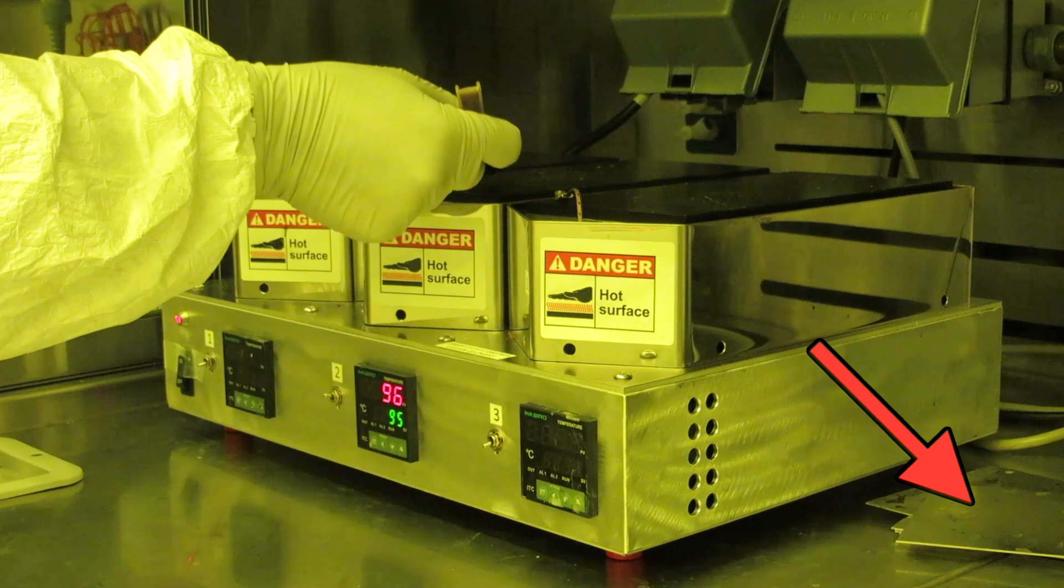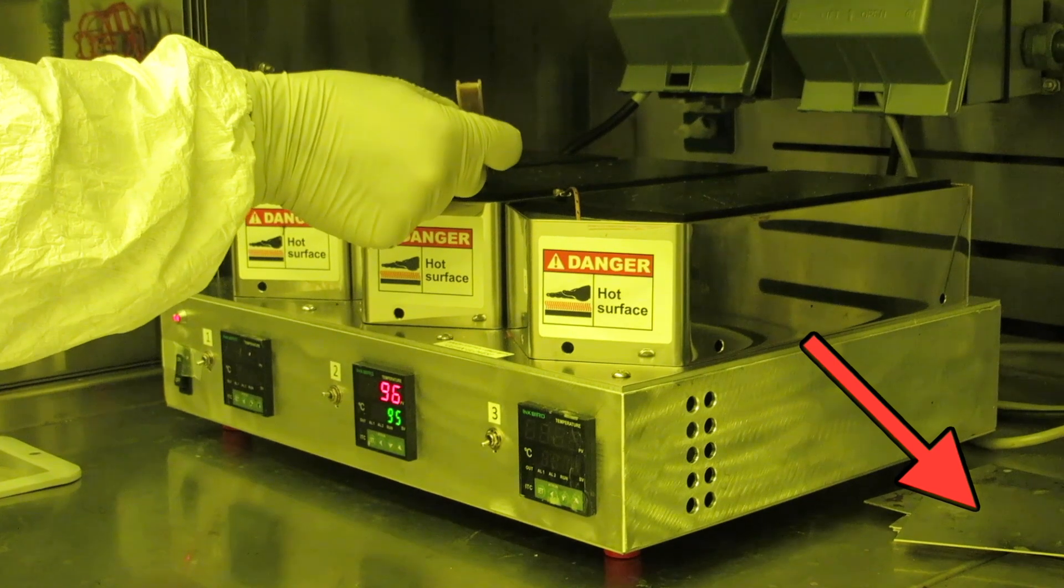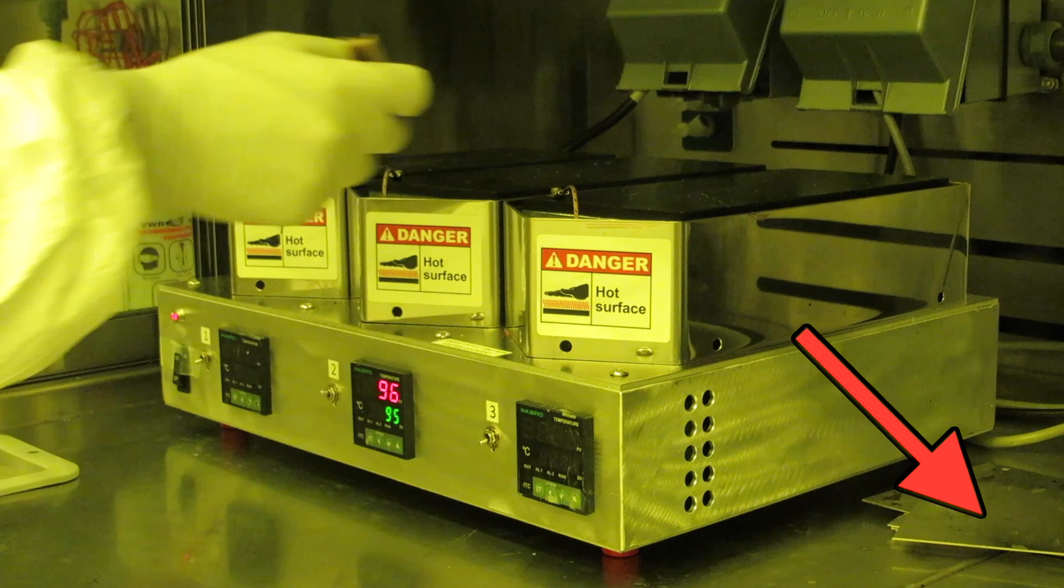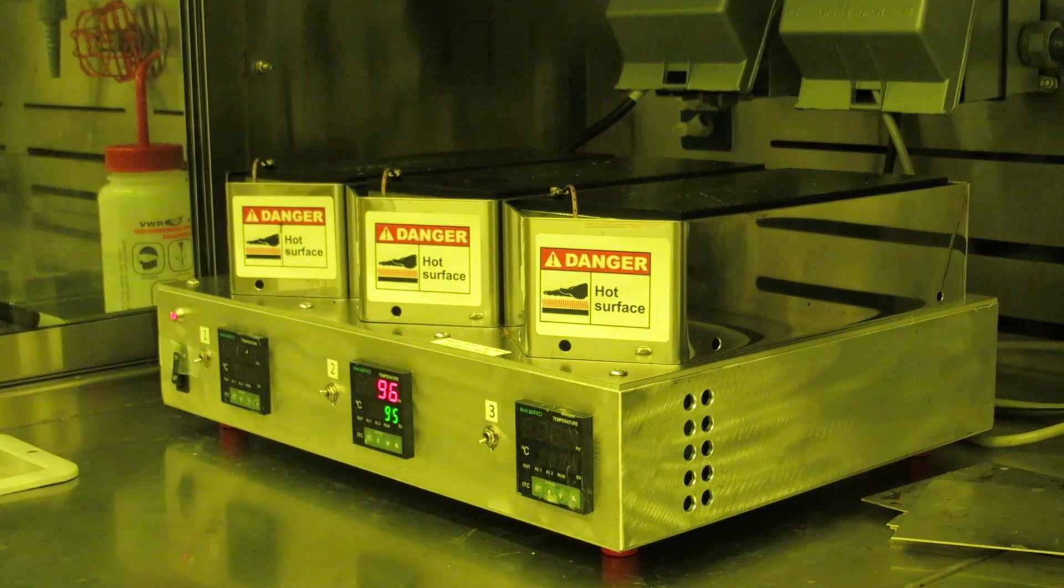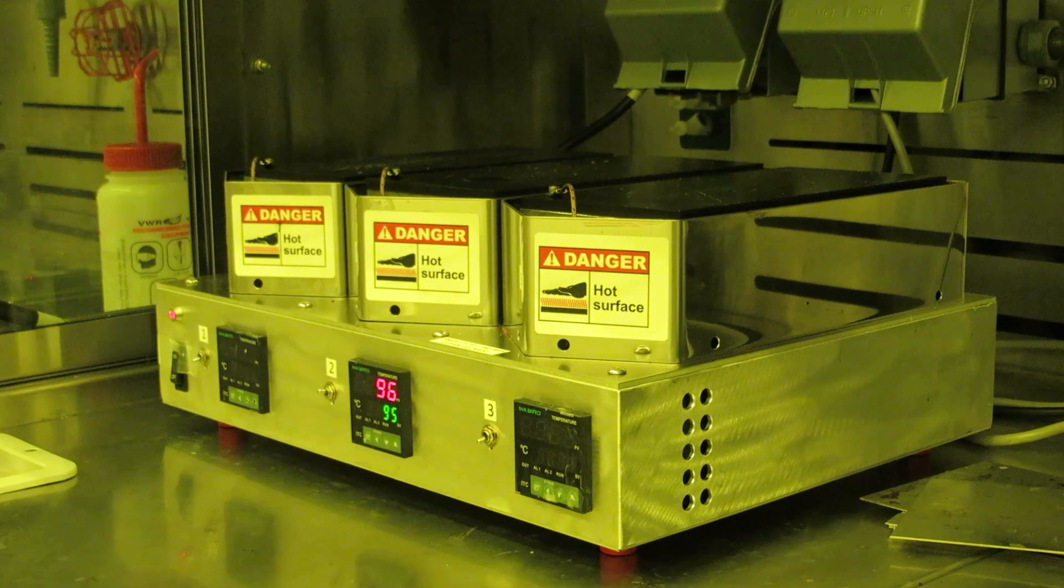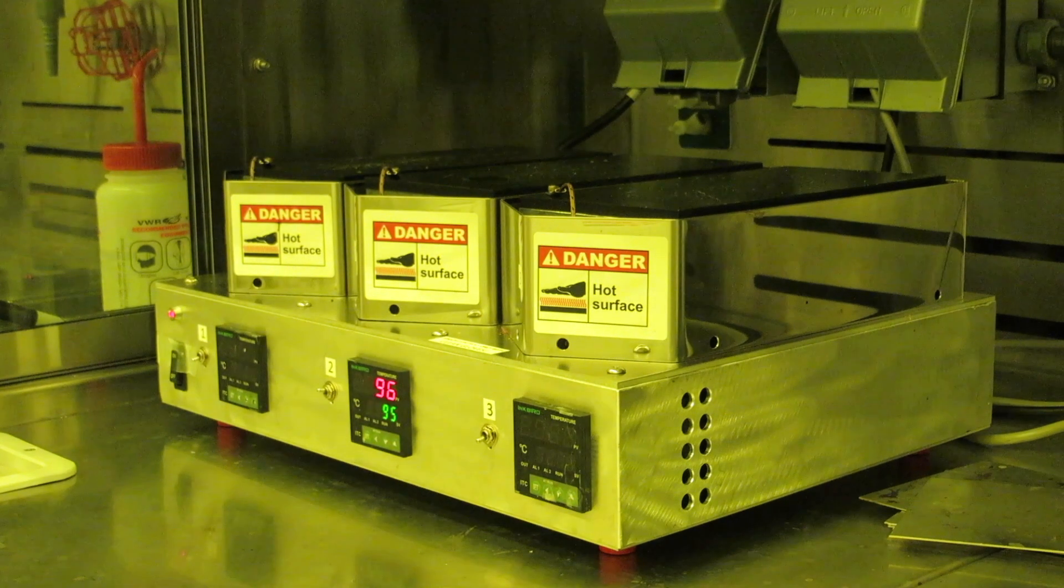These protect the surface from materials like SU8 which are likely to stick to the surface of the hot plate. Photoresist is usually really easy to wipe up with a wiper dampened in acetone. I like to use five minutes at 95 degrees C.